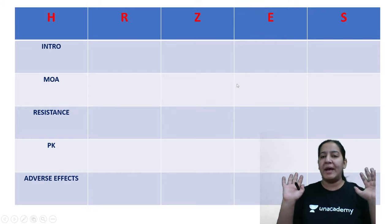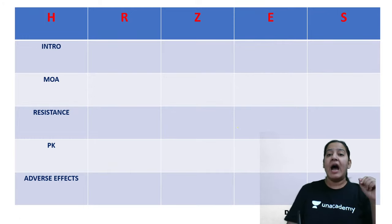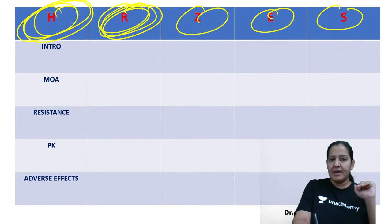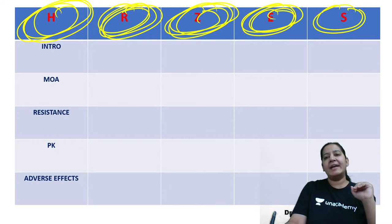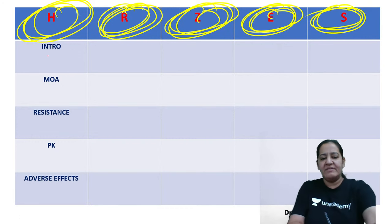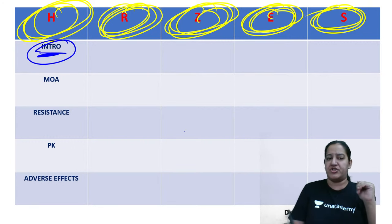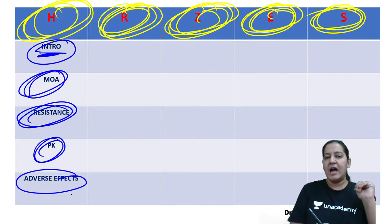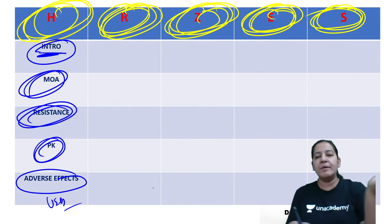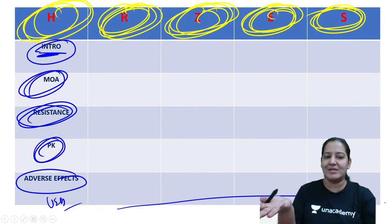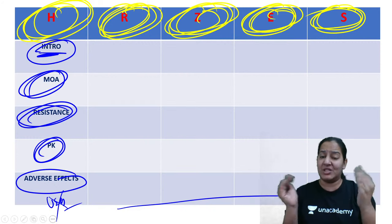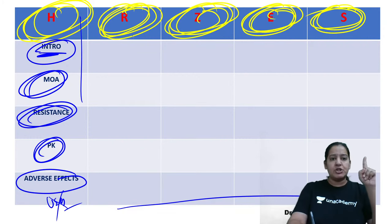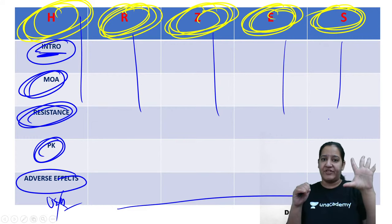There is no separate 'uses' column because all five are anti-tubercular drugs — the use is TB only. However, if any drug has additional uses beyond TB, I will mention those. After discussing each drug, I will launch corresponding poll questions. We will do polls five times — after each drug — and in the end, I will give a mixture of questions to test your understanding.